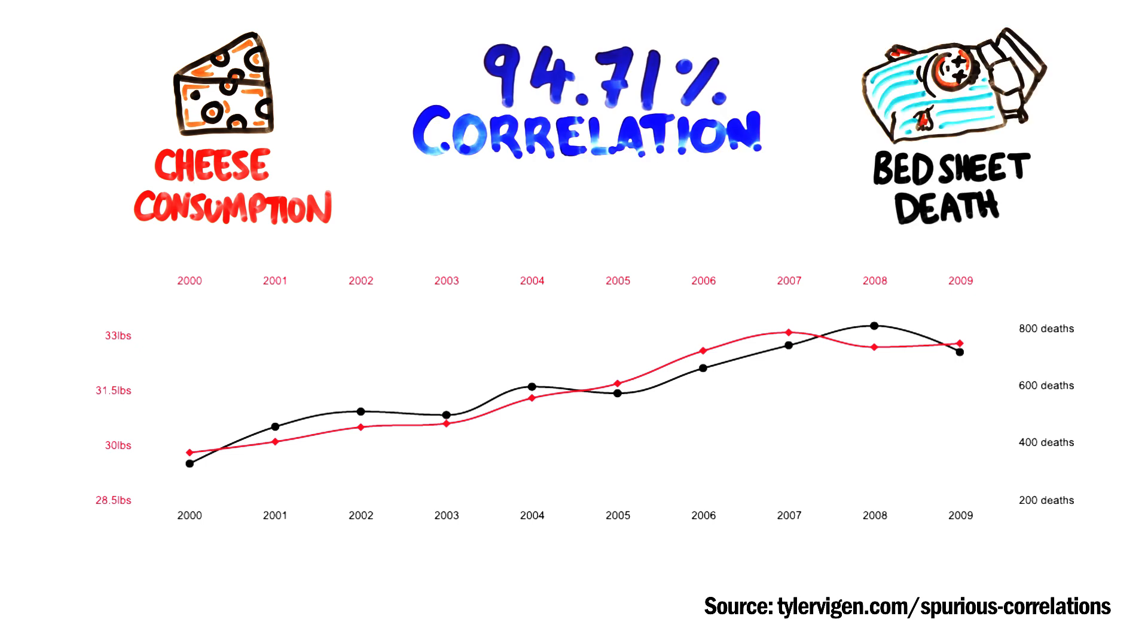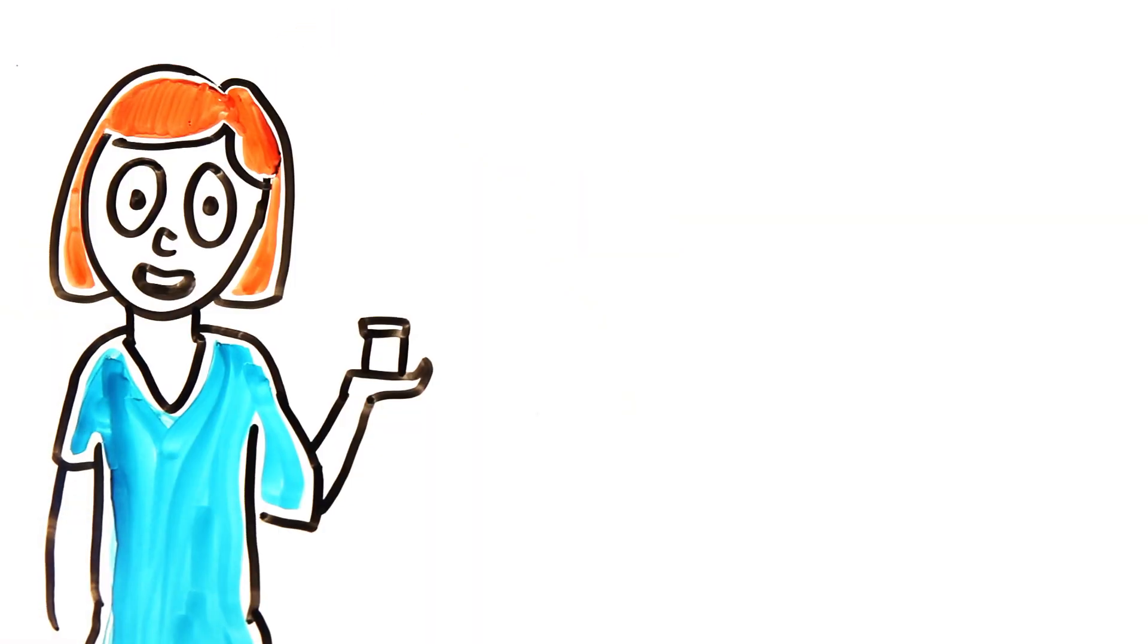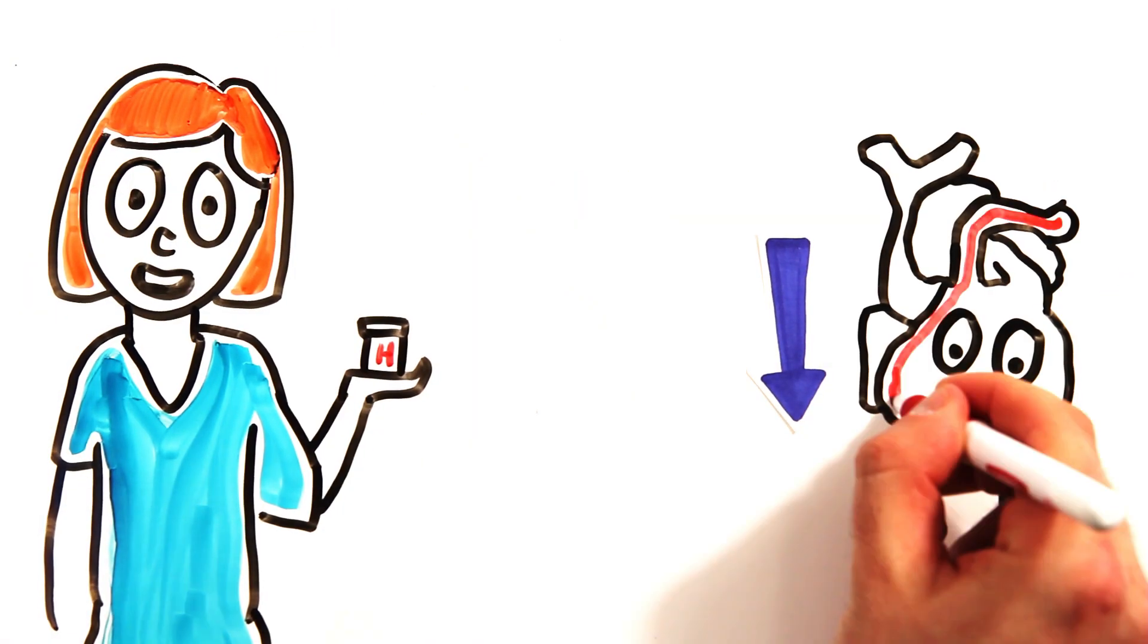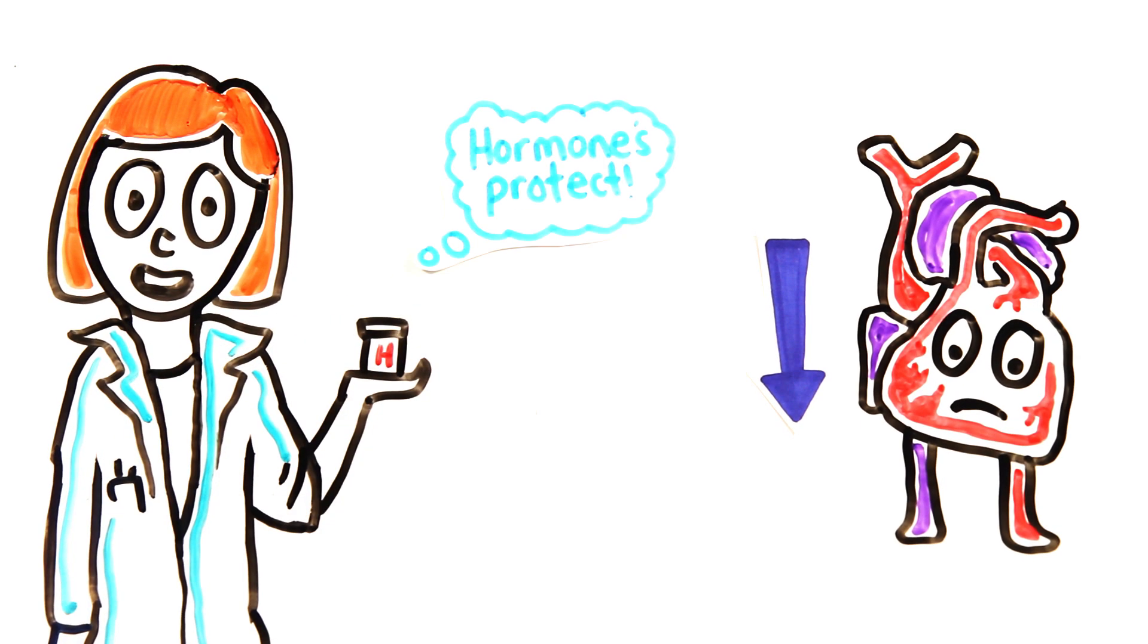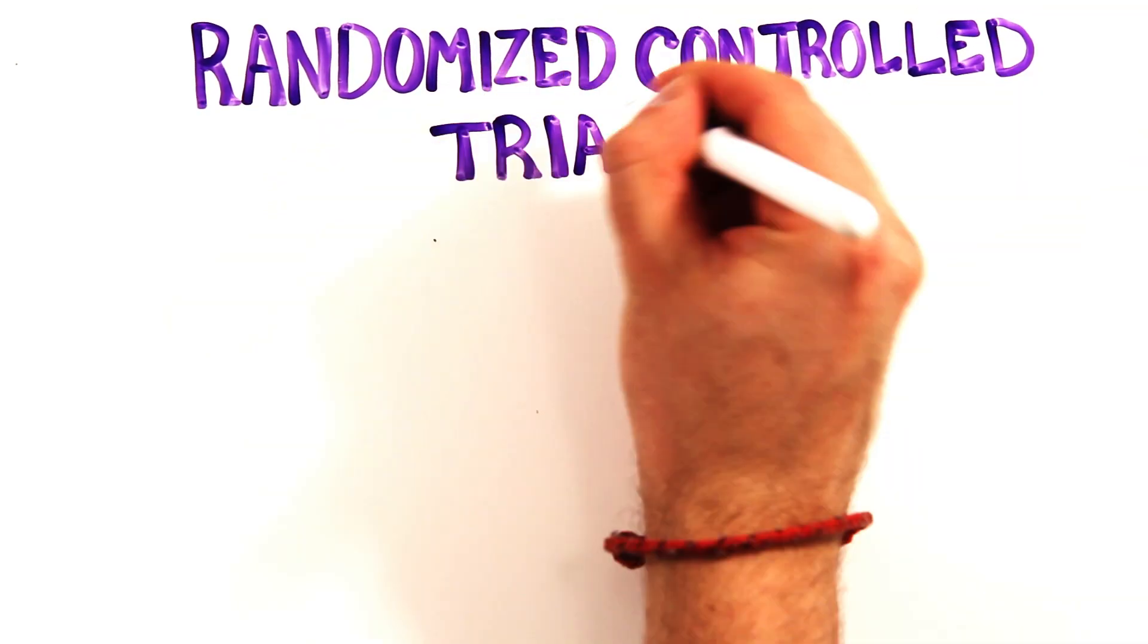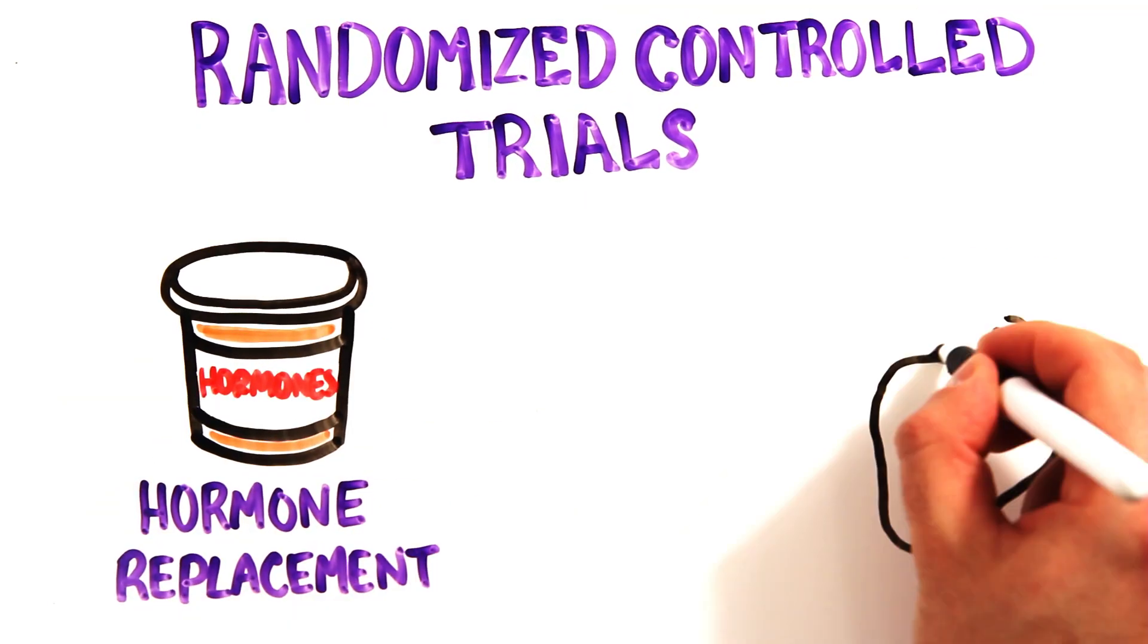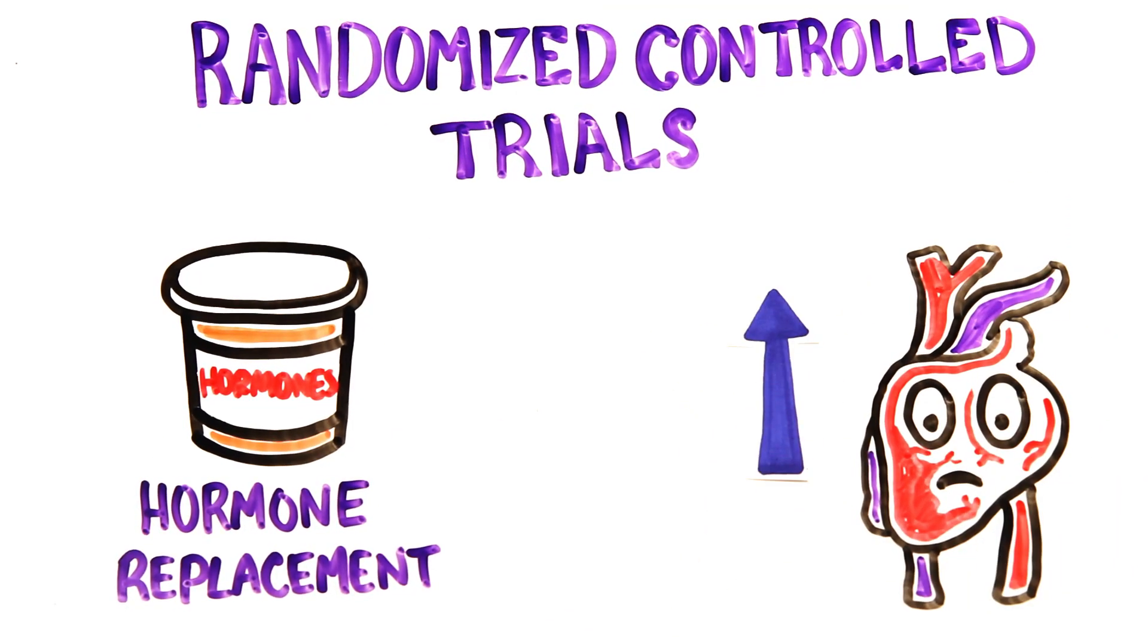But sometimes it isn't so obvious. Numerous studies found that menopausal women taking hormone replacement therapy had a lower than average incidence of heart disease, leading doctors to believe that hormone replacement could protect against heart disease. However, when women underwent randomized control trials, they found that hormone replacement therapy actually increased the risk of heart disease.